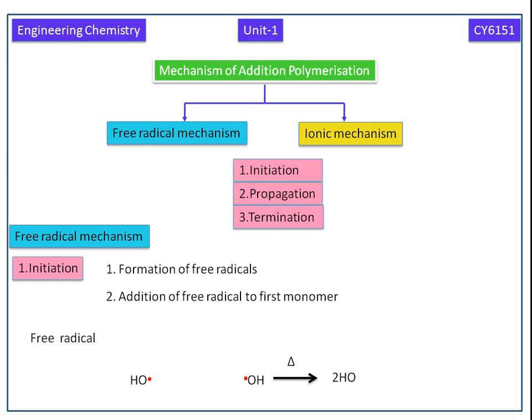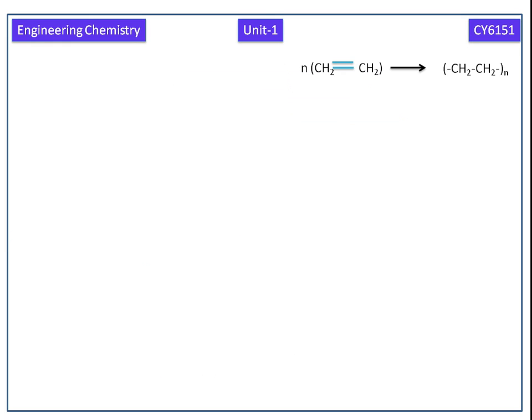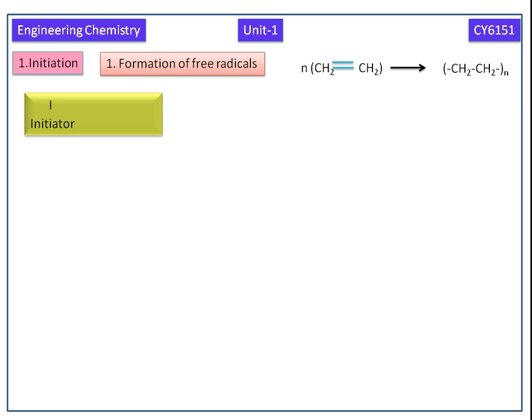This single electron species is called free radical. In initiation, the first step is formation of free radicals. The initiator will produce the free radicals.